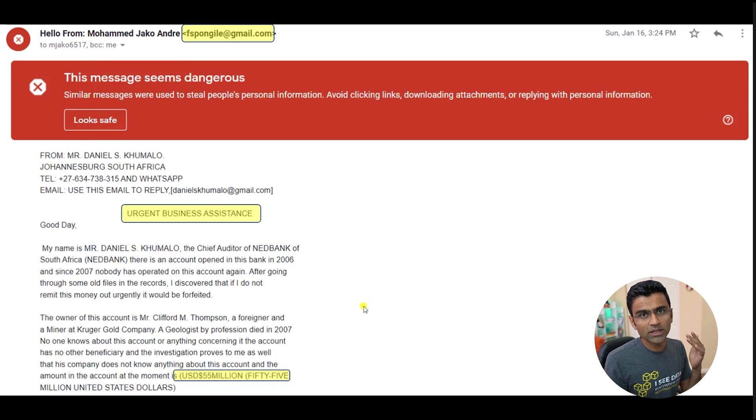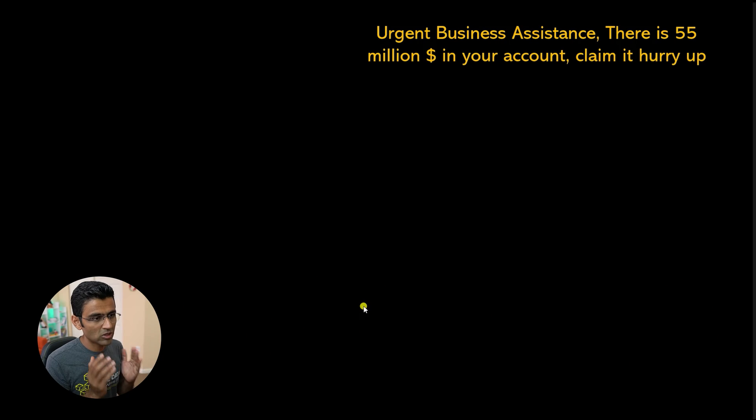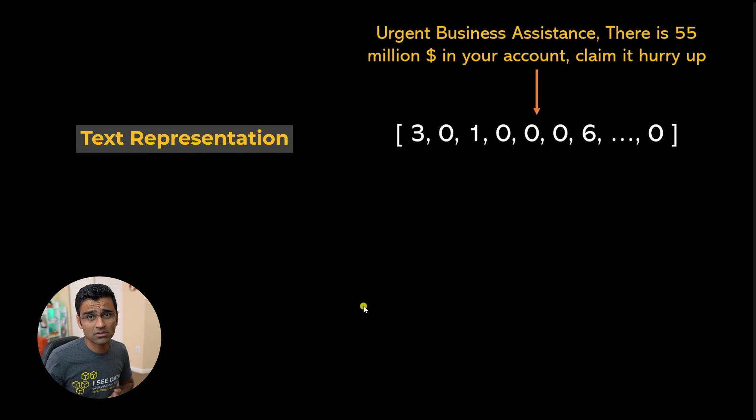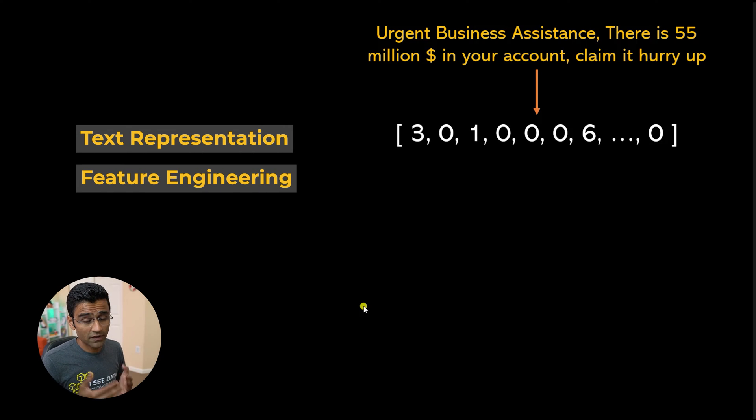So how do they classify the text into spam and ham? Ham means not a spam. When you have a text, a typical approach is to convert that text into a vector and this is also called text representation or feature engineering.